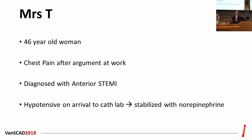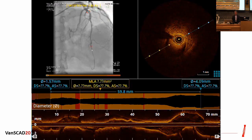I wanted to start with a case. This is a 46-year-old woman who presented with chest discomfort after having an argument at work. At that time in pre-hospital assessment, she was found to have an anterior ST-elevation MI with evidence of cardiogenic shock. She was brought to the cath lab for primary angioplasty, and on arrival was hypotensive — the definition of shock being when your heart is not able to produce enough blood flow to maintain perfusion to the organs.